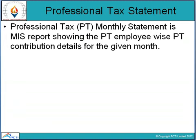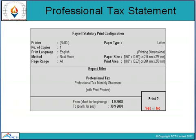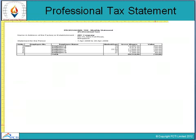The second part of Professional Texts is the Statement. The Professional Text Monthly Statement is an MIS Report showing employee-wise PT contribution details for a given month. This shows, according to your employees, how much PTE is generated. In the Print Preview, it displays the professional tax monthly statement with the company's information, employee number, and employee name.